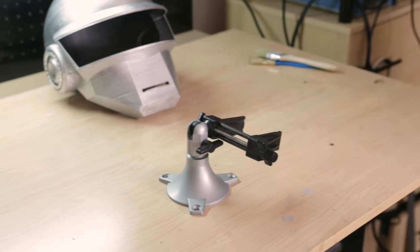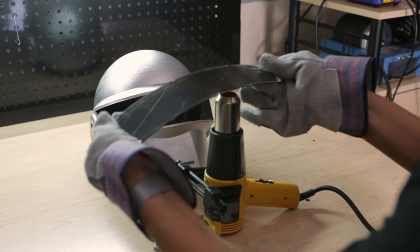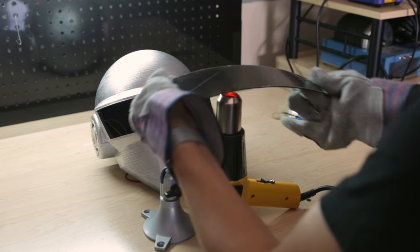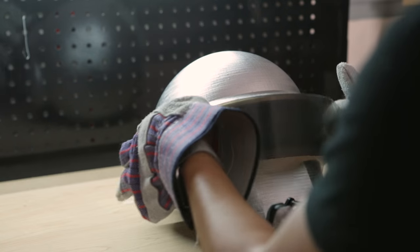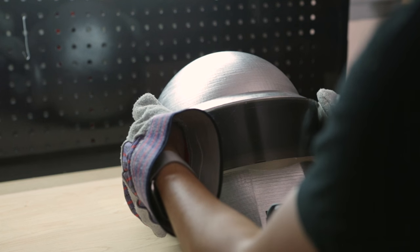To bend the acrylic into shape we'll set up a heat gun with a pan of ice to hold the gun in place. We can heat up the visor and bend the part into shape to get that curvature using the helmet as a reference. Allow the acrylic to cool down for a minute and try testing it to see if it fits into the helmet.